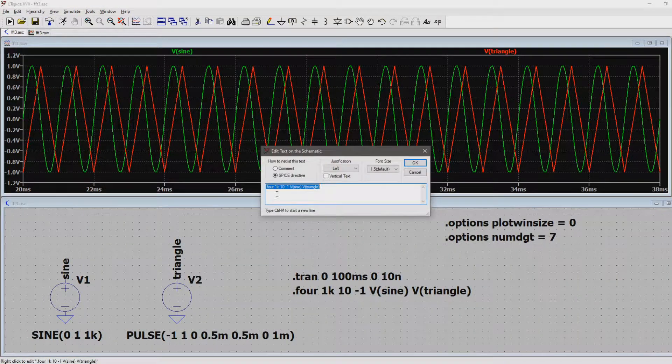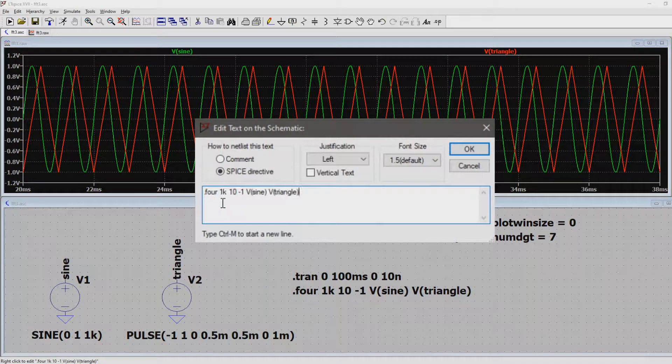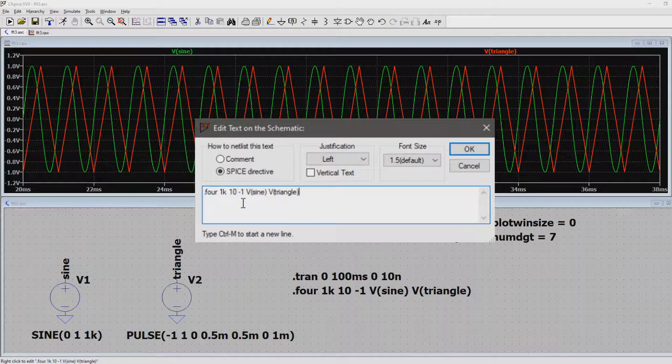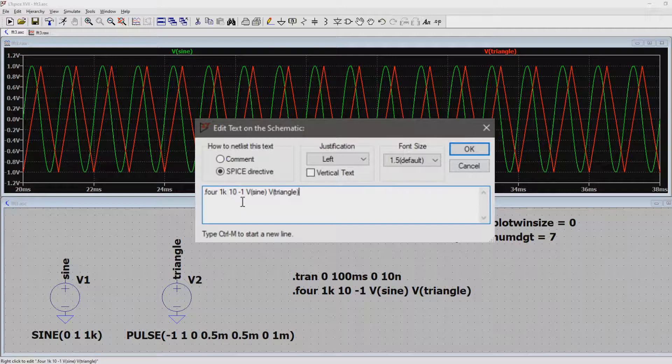The first value is the frequency of the fundamental we're going to analyze. In this case 1kHz. The second value is the amount of harmonics we're interested in. In this case 10. The third value is the amount of periods to include. I set it to negative 1 which tells LTSpice to use all the data available. And the last values are where the signals are we want to analyze.